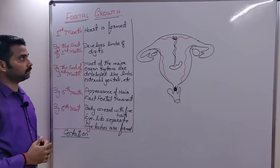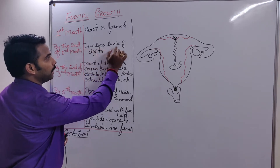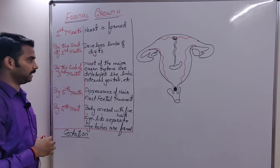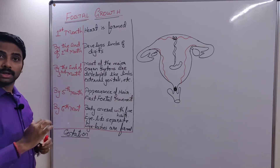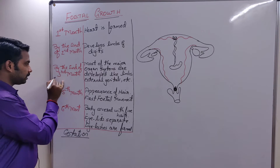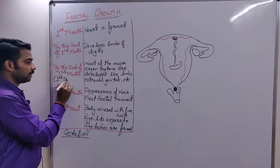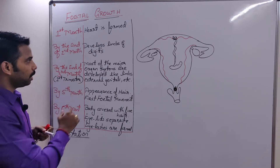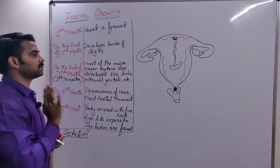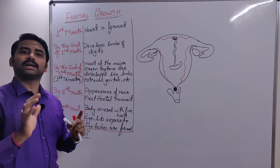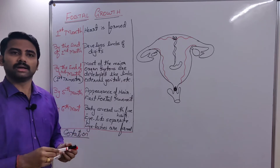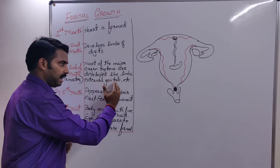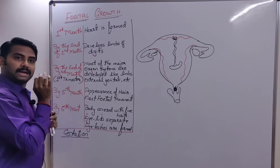By the end of the second month, the fetus develops limbs and digits. By the end of the third month — which is the end of the first trimester — most of the major organ systems are developed: digestive, respiratory, excretory, limbs, and external genitals. Almost everything is developed by the end of three months.